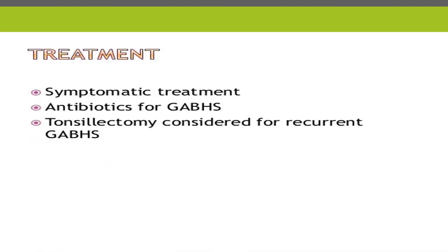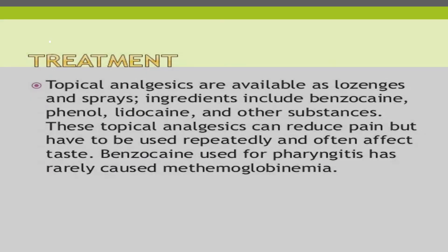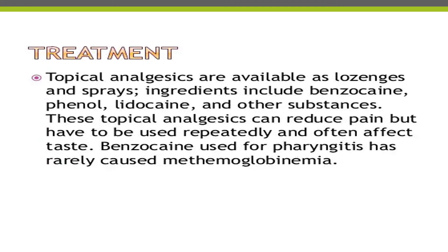Regarding treatment, components include symptomatic treatment, antibiotics for Group A beta-hemolytic streptococcus, and tonsillectomy for recurrent Group A beta-hemolytic streptococcus. Supportive treatment includes analgesia, hydration, and rest. Analgesics may be systemic or local — non-steroidal anti-inflammatory drugs are usually effective. Topical analgesics such as honey with lemon, lozenges, and sprays can also be used as local painkillers.